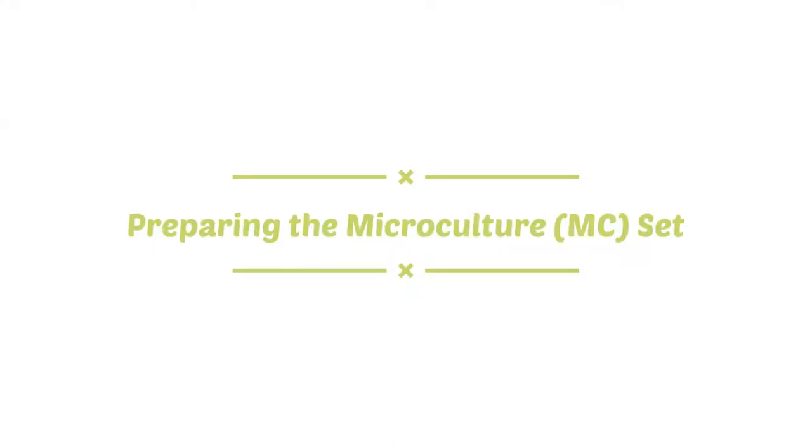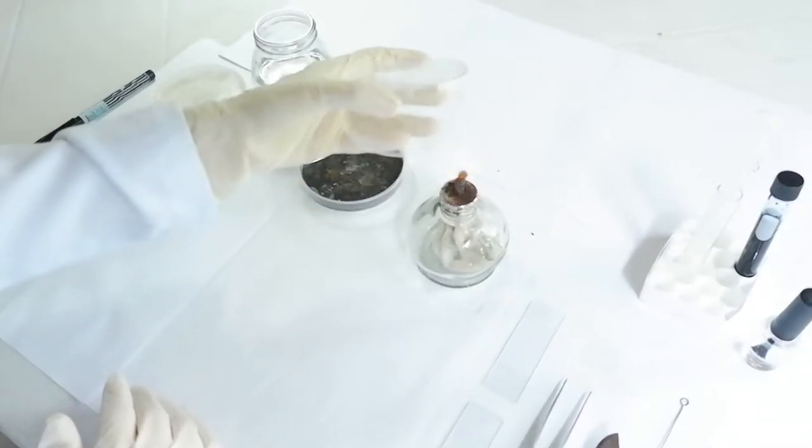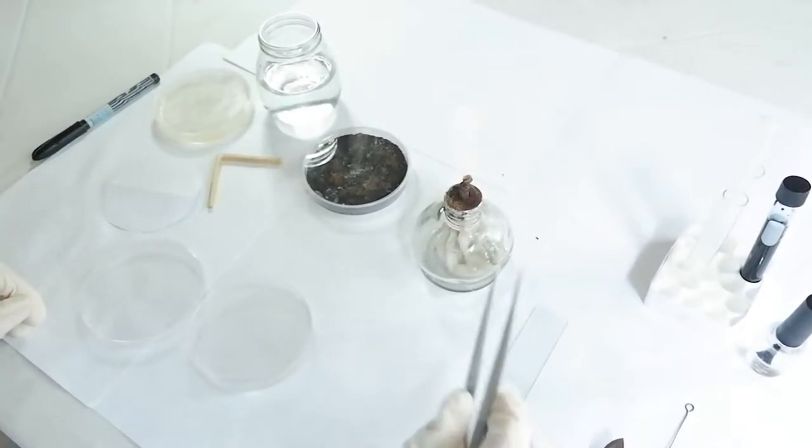Preparing the microculture set. Starting with our pepper dish, we place our filter paper and bent applicator stick making sure they have been sterilized or autoclaved.